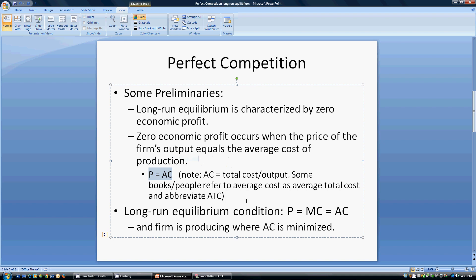In long-run equilibrium, the condition is: price equals marginal cost equals average cost, and the firm is producing where average cost is minimized. As we're going to see, this is one of the keys for long-run equilibrium.